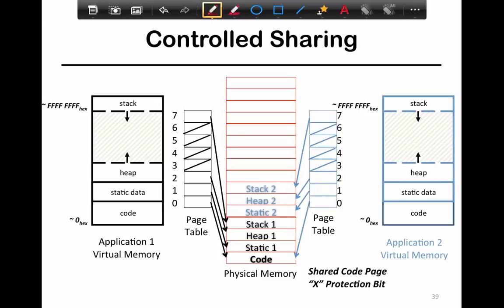And finally, you can also achieve controlled sharing, where for example you have the same process running - you have two copies of the same application running. In this case, all the code and all the instructions are the same because they're exactly the same program.